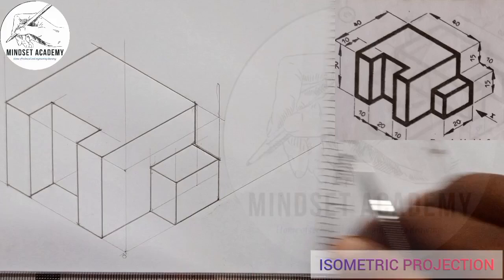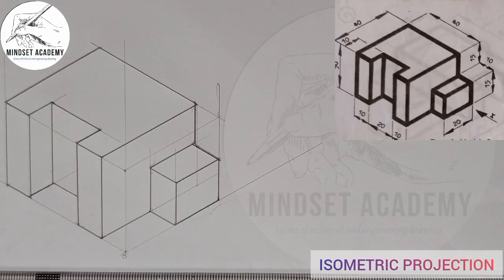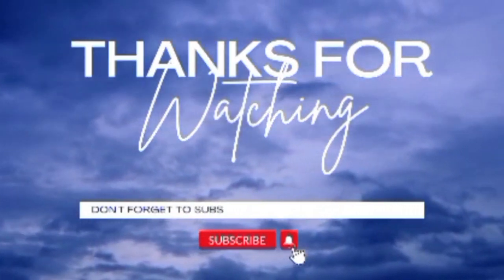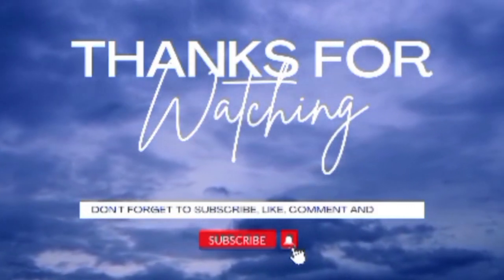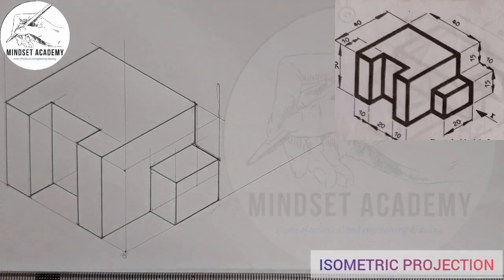We have successfully reproduced the figure shown on the right-hand side of the screen in isometric projection. Everything you see is drawn at an angle of 30 degrees and 90 degrees. If you found this video helpful, please don't forget to subscribe, like, comment, and share. Thanks for watching.